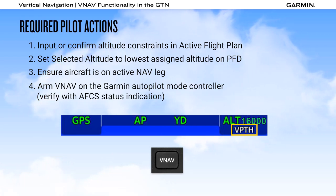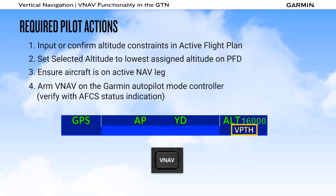For non-Garmin autopilots, you need to set the vertical speed required at the top of descent.